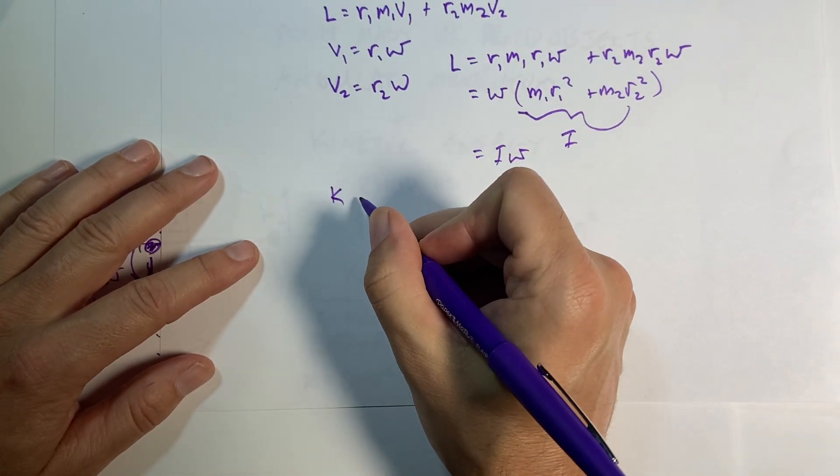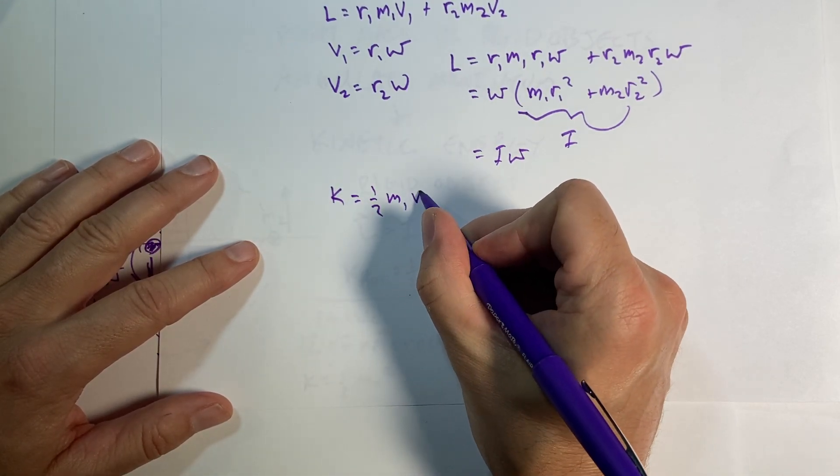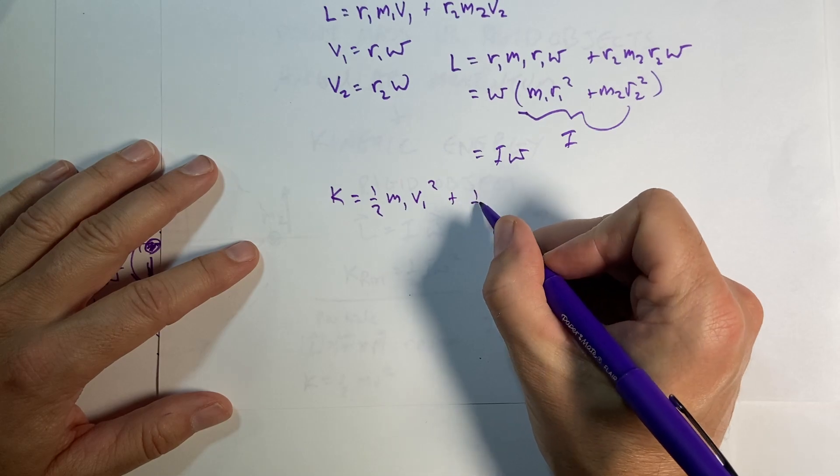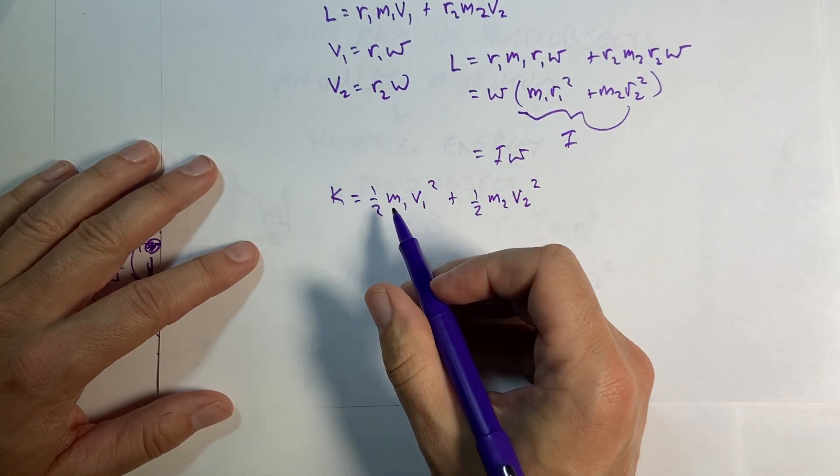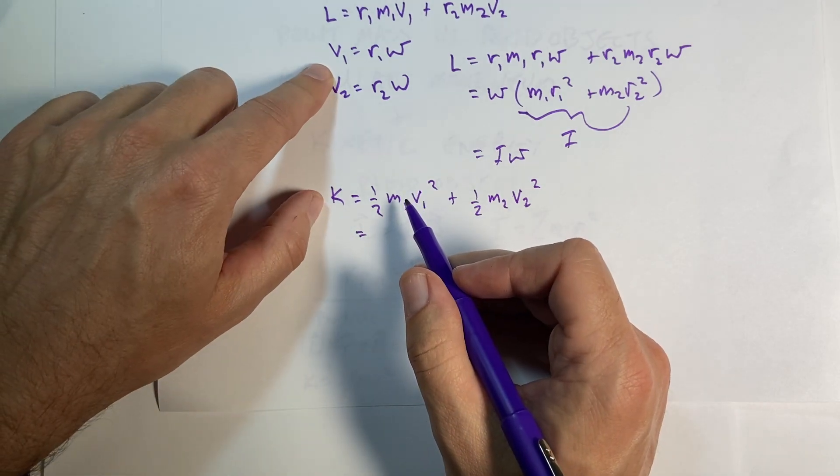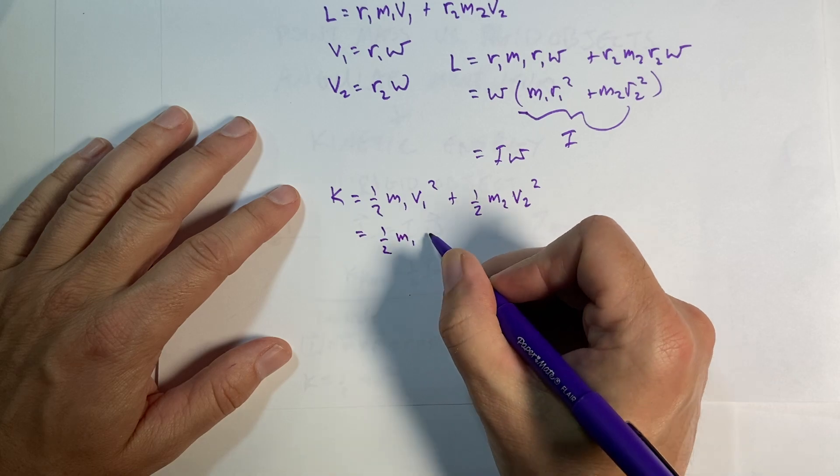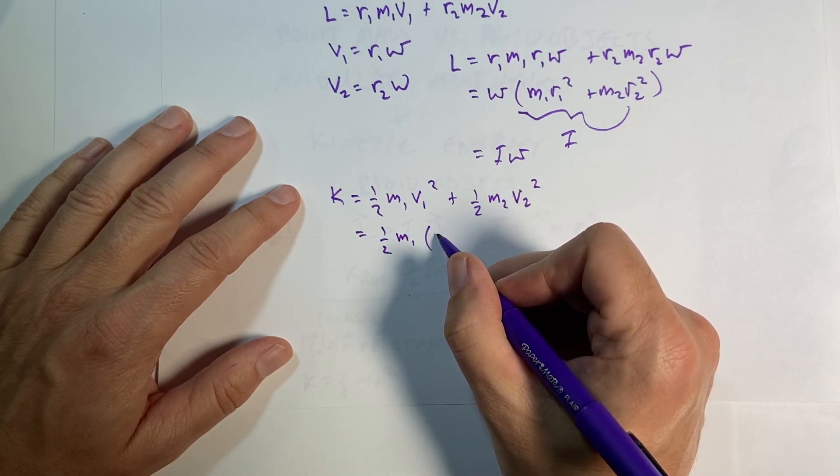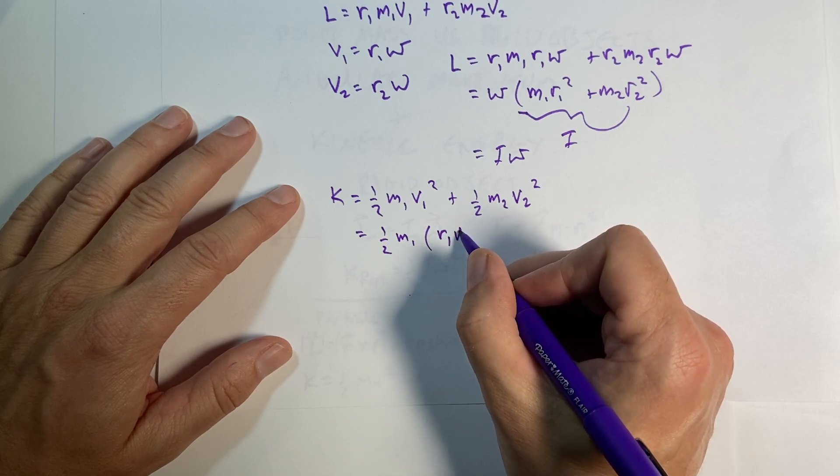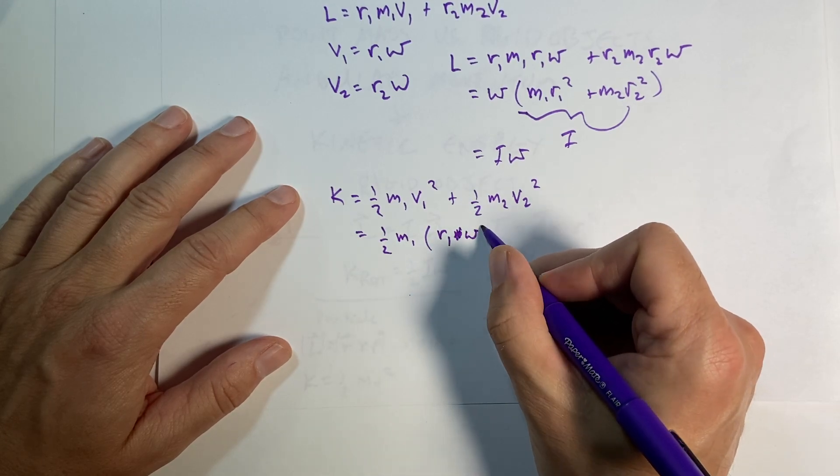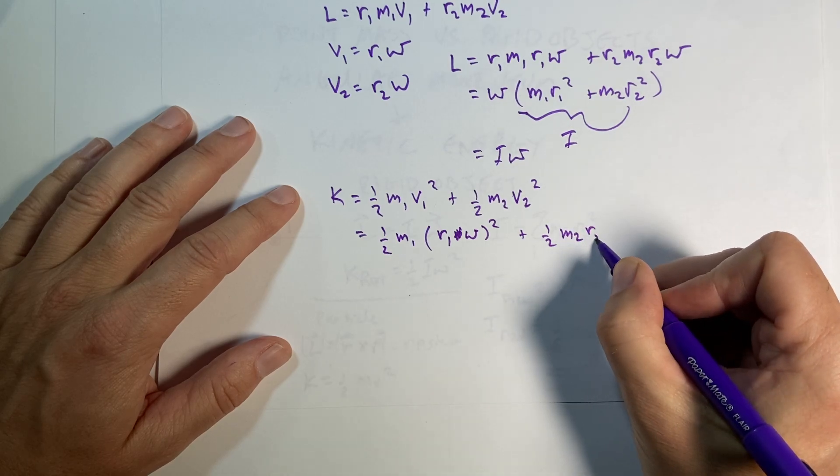What about the kinetic energy? Well, I do the same thing. Kinetic energy is one half m1 v1 squared plus one half m2 v2 squared. So if I use the same definition of velocities, I get one half m1 r1 omega squared plus one half m2 r2 omega squared.